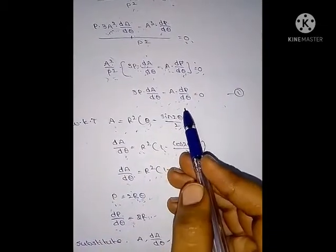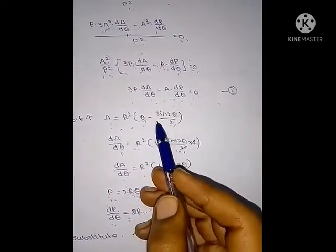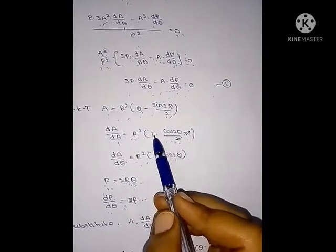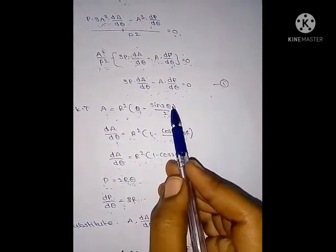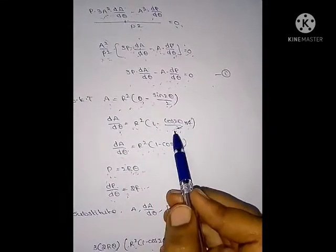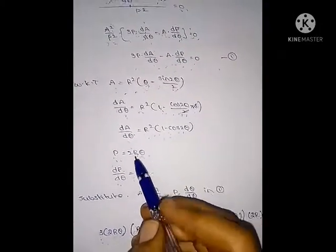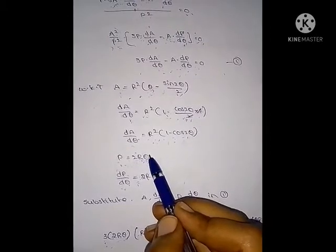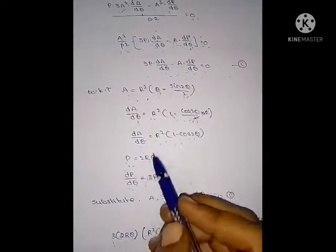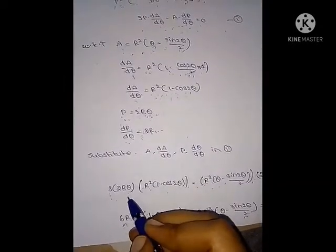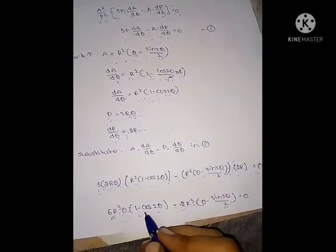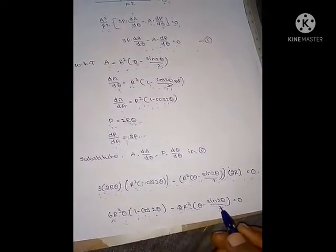Again, dA/dθ = R²(1 − cos2θ) and dP/dθ = 2R. Substituting: 3·2Rθ·R²(1 − cos2θ) − R²(θ − sin2θ/2)·2R = 0. This gives 6R³θ(1 − cos2θ) − 2R³(θ − sin2θ/2) = 0. Taking 2R³ common: 3θ(1 − cos2θ) − (θ − sin2θ/2) = 0.